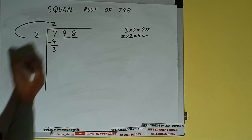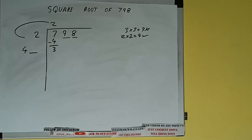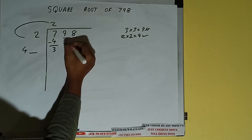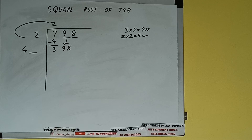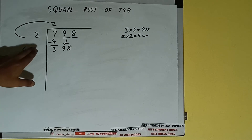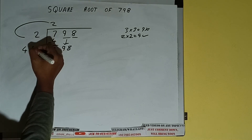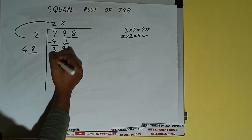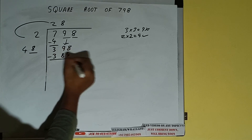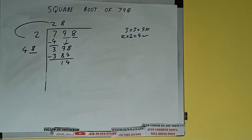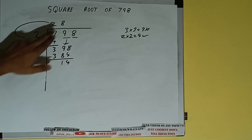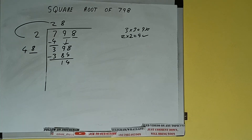Add both: 2 plus 2 will be 4. Write it here and keep one digit extra. This number we need to make bigger, so bring the next pair down — it will be 398. Whatever number we write here we have to write here also. If we write 8 here and 8 here, it will be 48×8 = 384. Subtract, and 14 will be left.